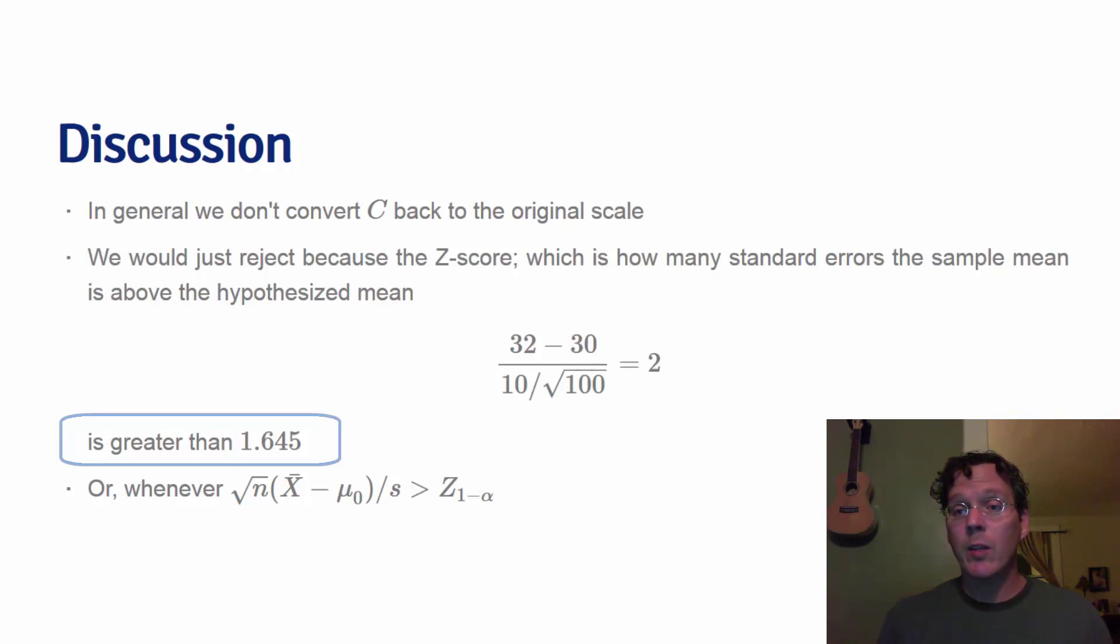I should reiterate, the chance of this occurring under the null hypothesis is less than 5%. So we're going to reject the null hypothesis in favor of the alternative hypothesis. So I've just simply written out this rule again here on the final line. We're going to reject whenever x bar minus the hypothesized mean divided by the standard error of the mean is greater than the appropriate upper quantile that leaves alpha percent in the upper tail.